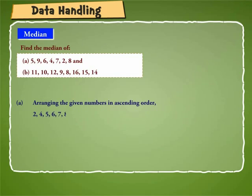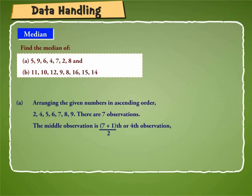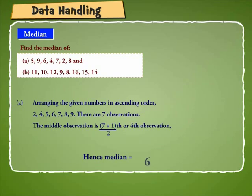We get 2, 4, 5, 6, 7, 8, 9. There are 7 observations which is odd. So the middle observation is 7 plus 1 by 2th or 4th observation. Hence, median is equal to 6.